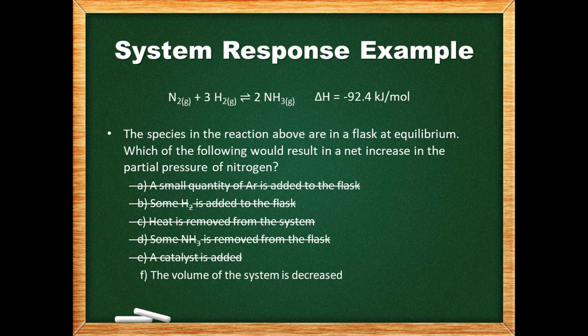What if we decrease the volume? Shifting to the right will reduce some of the increase in pressure. Sure, there is a right shift, but the stress will not be completely alleviated. At the new equilibrium, all the concentrations will be higher. In other words, the partial pressure of nitrogen will have increased. Therefore, decreasing the volume is the correct answer.